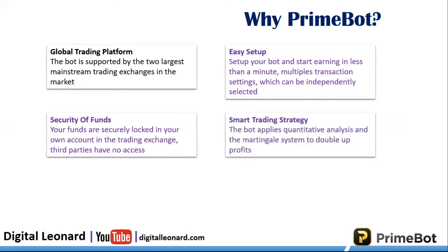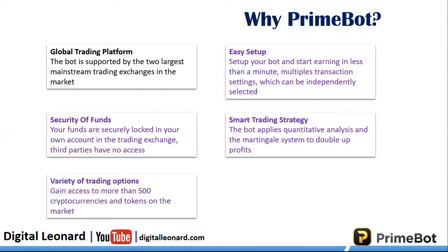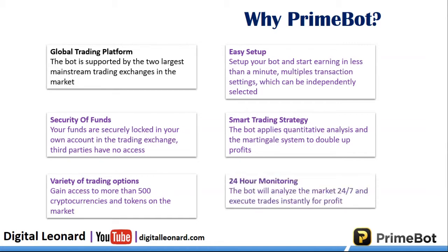Embedded into this bot are smart strategies that will take you time — if not years — to actually learn when you want to do crypto trading manually, because there are a lot of skills you need to acquire. But this bot has smart strategies embedded into it to help do this. And there are varieties of assets you can trade. You can trade Bitcoin, you can trade Ethereum, you can trade some of the most well-known coins in the market, and you can have up to more than 500 tokens that you can trade in a day.